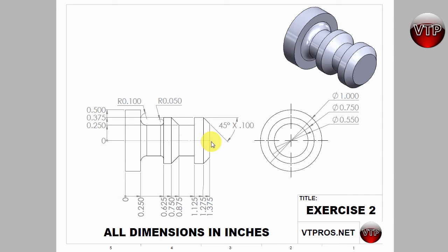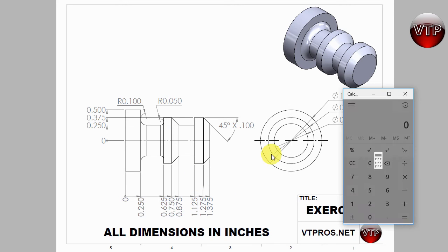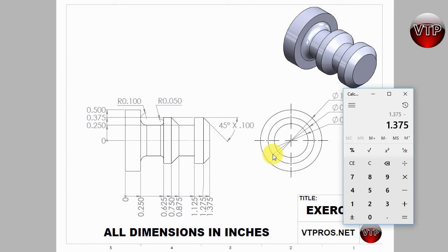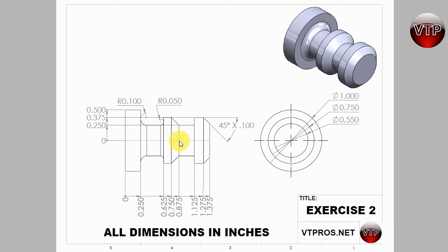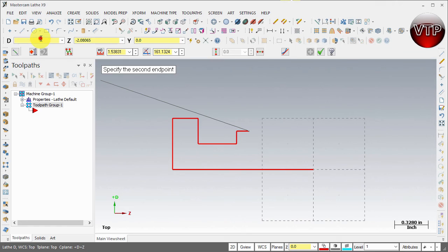So again, 1.375 minus 0.875 — let's open up the calculator — equals a half an inch. So it's going to be negative 0.5 in Z and 0.5 in D. Come over to D, enter 0.5; in Z enter negative 0.5; leave Y the same and hit enter. There you go — that's what you should have.